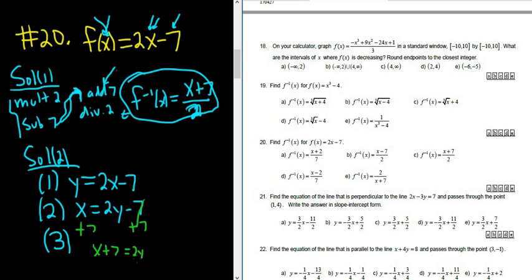So we get x plus 7 equals 2y. And then to finish solving for y, we just divide by 2. So we get y equals x plus 7 over 2. So the inverse function is x plus 7 over 2, and this should be one of the choices.